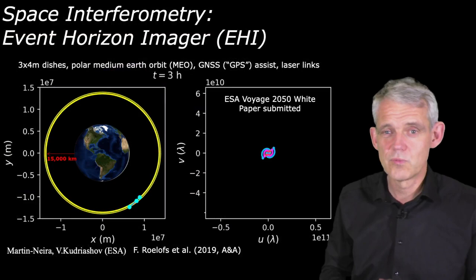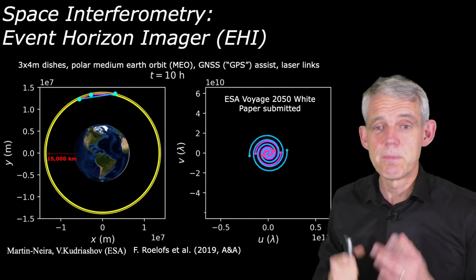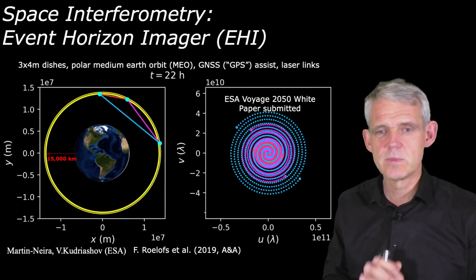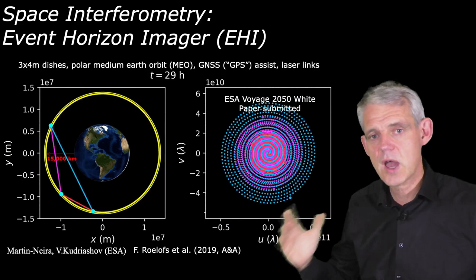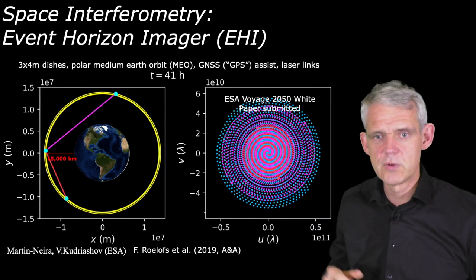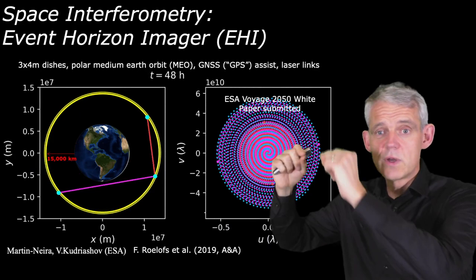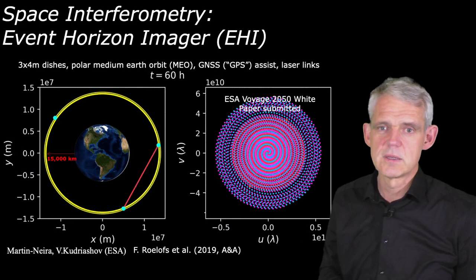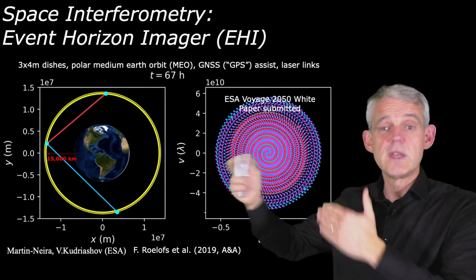What will you gain from space interferometry? Of course, higher resolution, but also — and I think that is as important — higher UV coverage. I think that's going to be key to make good images to compare well with those simulations. This is a concept we developed called the Event Horizon Imager. What you see here are three satellites going around in orbit around Earth at medium Earth orbit and slightly different orbital heights. The satellites will drift apart and rotate as they drift, so you get all orientations and all separations in your array, and you can adjust this to any orbital height and time scale you want.